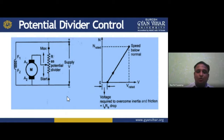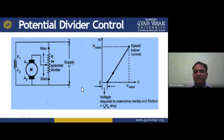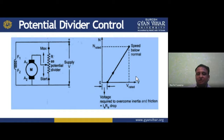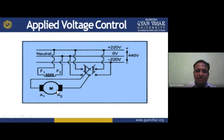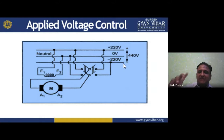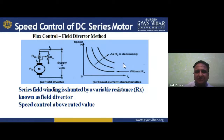Potential divider control: a potential divider resistance is connected directly, providing speed control and also usable for braking purposes. Applied voltage control: the applied voltage to the armature is varied from 0 to rated voltage. Varying armature voltage varies armature current and flux, hence controlling speed — similar in effect to flux control but implemented by varying the applied voltage directly.